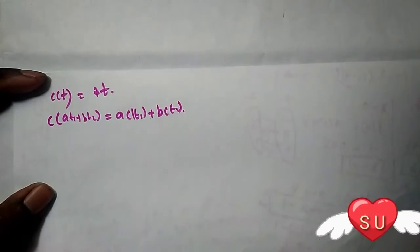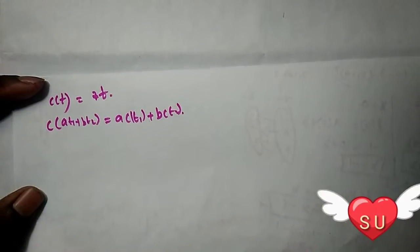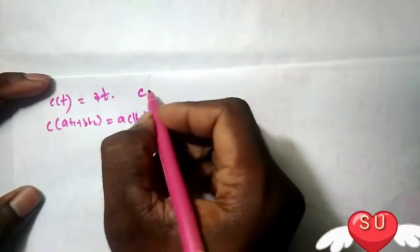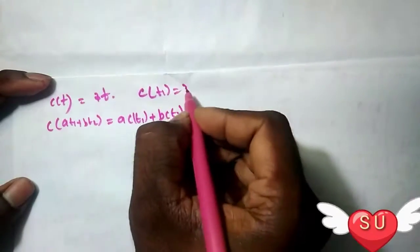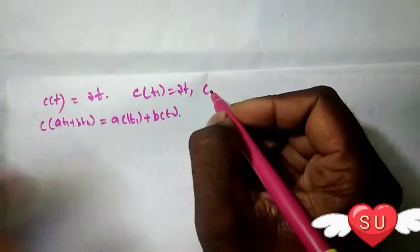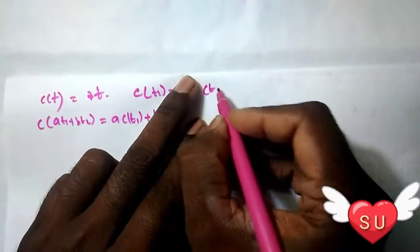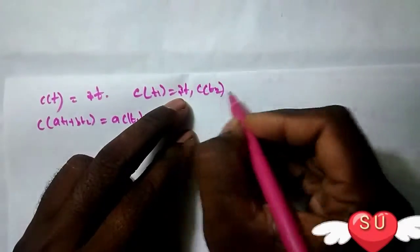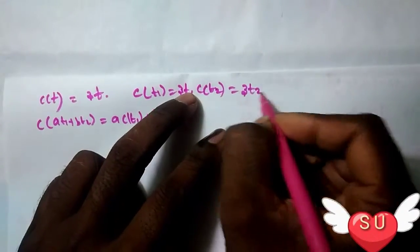In this problem we are going to show this. Now, C of T equals three T. So C of T1 equals three T1, and C of T2 equals three T2.